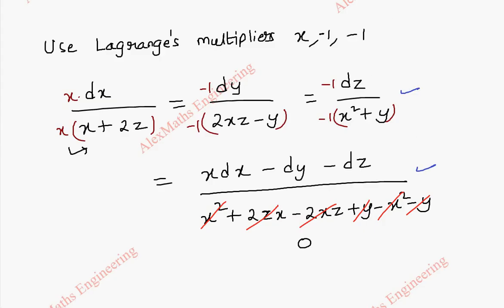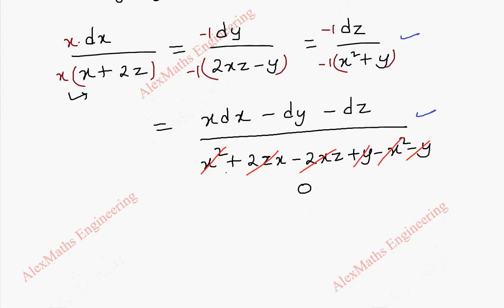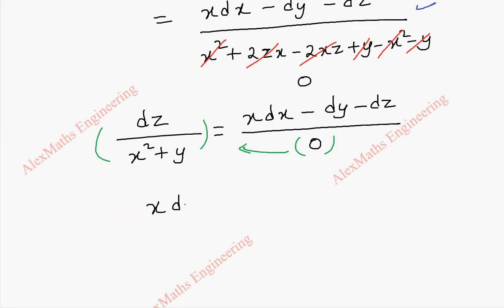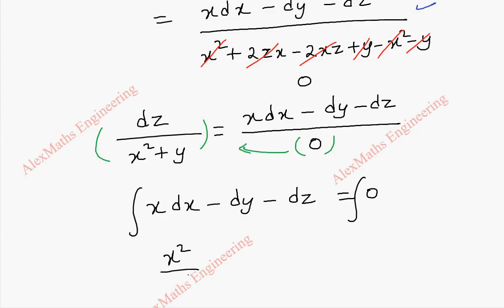Taking the last term as written: dz/(x² + y). Setting x·dx - dy - dz divided by 0 equal to dz/(x² + y). By cross multiplication, the entire term multiplied by 0 gives: x·dx - dy - dz = 0. Integrating both sides: x²/2 - y - z = 0 plus constant c₁.